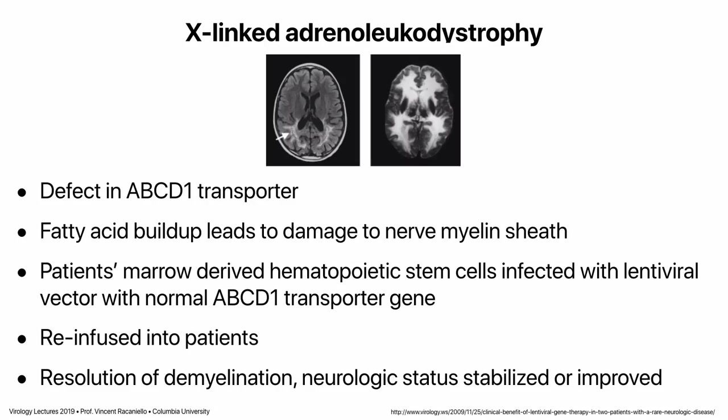Another disease addressed is X-linked adrenoleukodystrophy, where patients have a defect in the ABCD1 transporter, causing fatty acid buildup and damage to myelin — visible as white areas on brain scans. Bone marrow stem cells were removed from patients, infected with a lentivirus vector containing the normal ABCD1 gene, and reinfused. In these patients it resolved the demyelination, and neurological issues either stabilized or improved. This was also deemed to work.